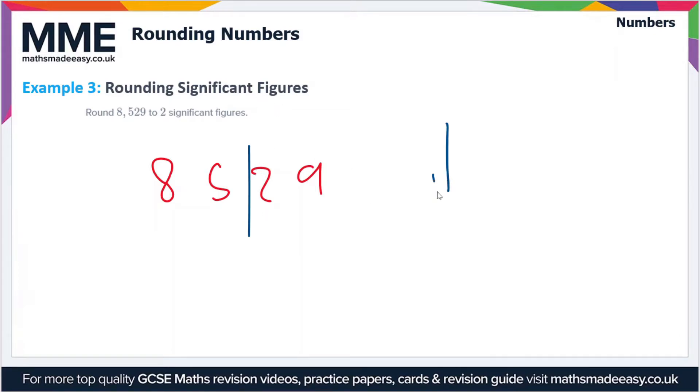So we're left with 8,500. Now remember to put the zeros in if you've got thousands in this case and you're rounding to two significant figures, because you have to keep the place value the same when you've done the rounding.